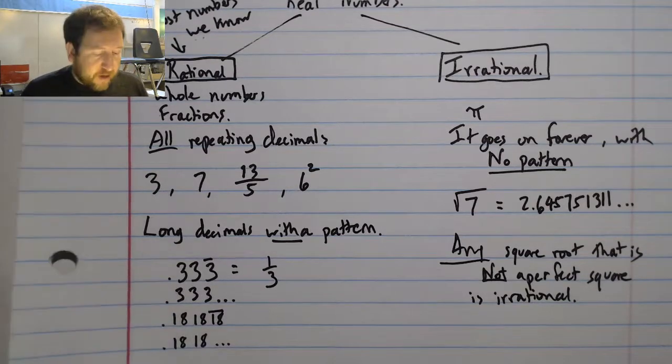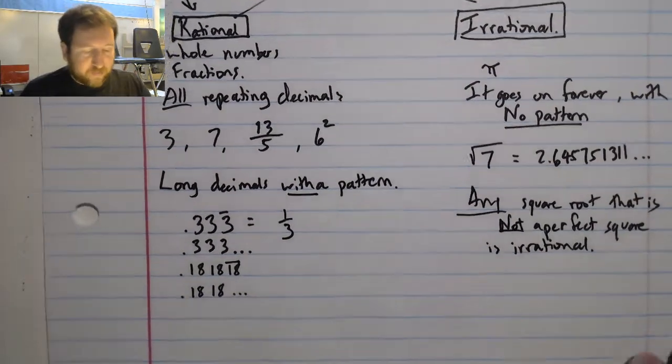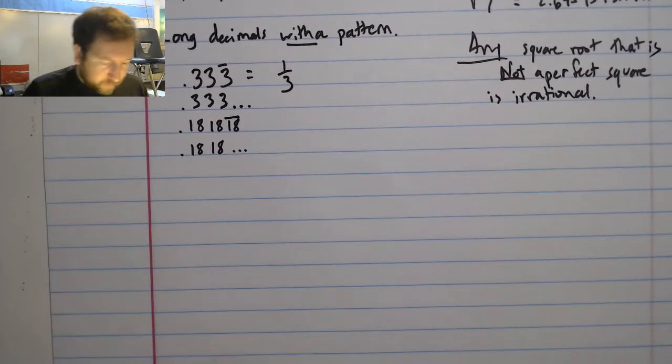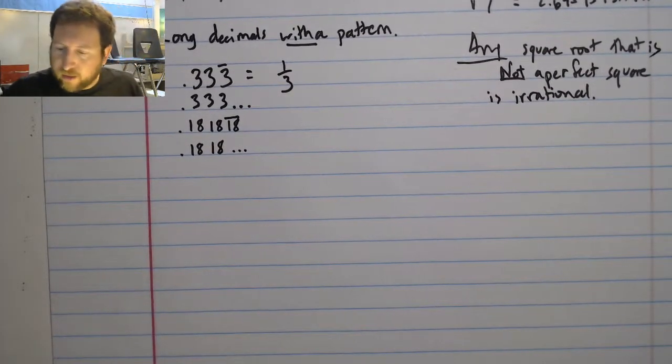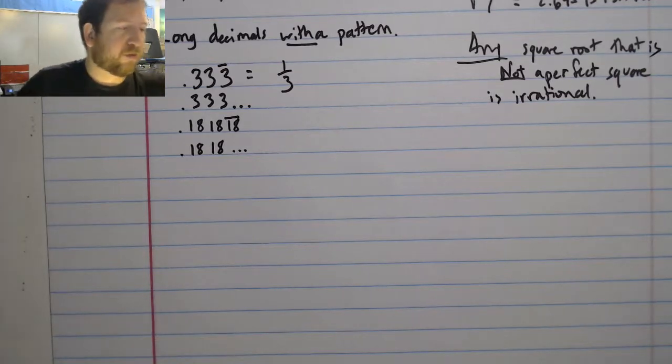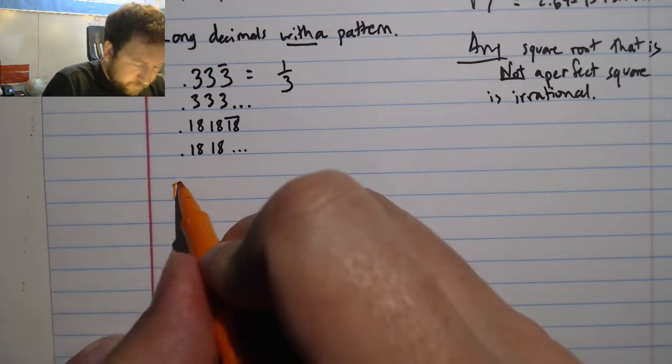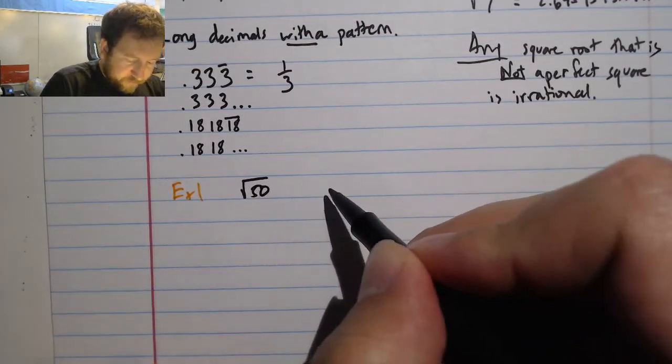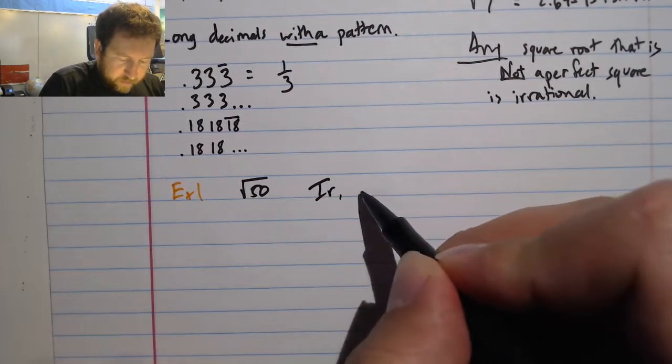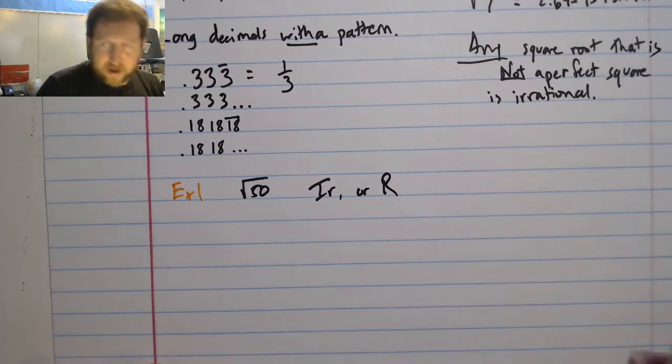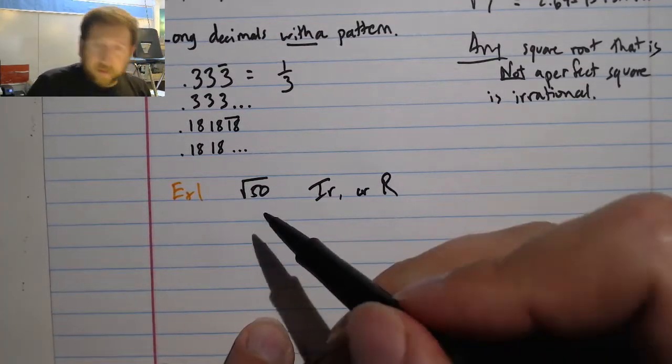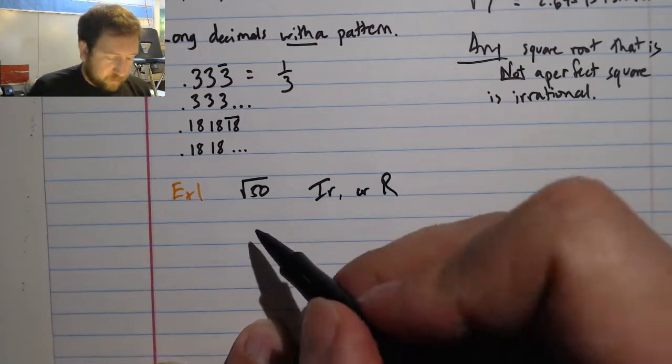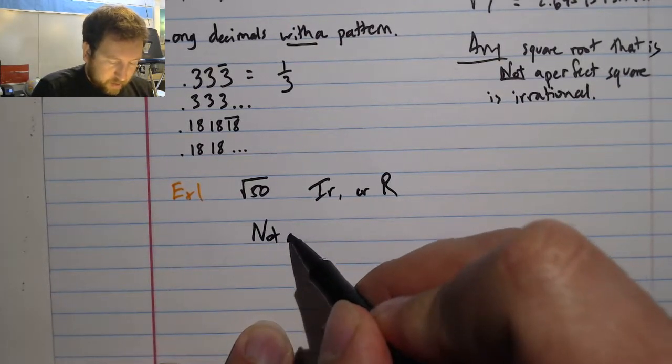This is kind of key to our understanding of these two numbers. In this section, all you're going to be doing is sorting some numbers. For example, let's take a look at some examples. Example 1: if we take a look at the number square root of 50, irrational or rational? Well, it's a square root. Is 50 a perfect square?